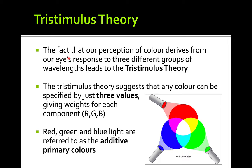The tristimulus theory suggests that any color can be specified by three values corresponding to the three cone types. We call these the red, green, and blue components. Red, green, and blue light are referred to as the additive primary colors, because we add these components together to produce the actual color.